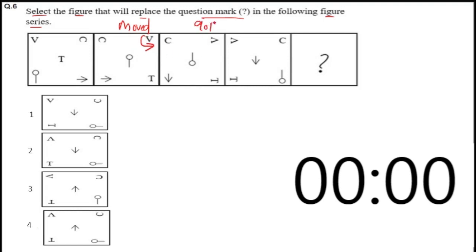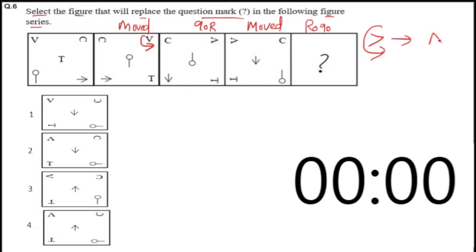So there is a 90-degree rotation in the third figure. In the fourth figure, V changed its position — V moved from right to left. That means in the fifth figure, we will rotate 90 degrees and stay in the same place. So in the fourth figure, V is like this, and in the fifth figure we rotate 90 degrees, meaning V will become inverted — V will be like an inverted V symbol.